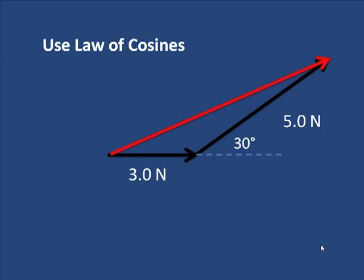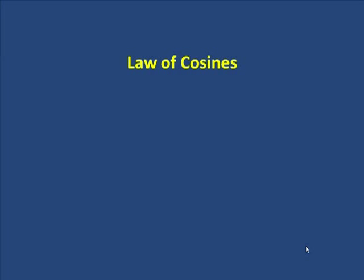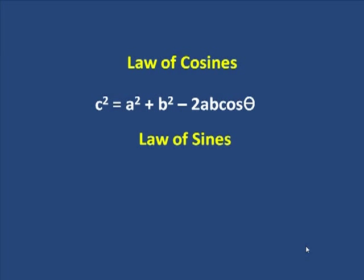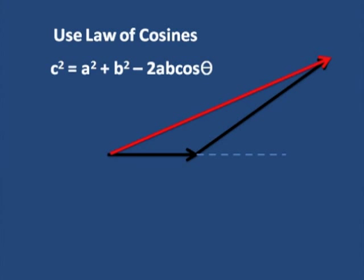The law of cosines is c² = a² + b² - 2ab cos θ, and you will need the law of sines. These should be written on a card right beside you all the time.